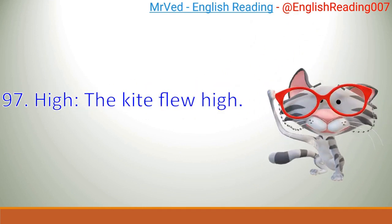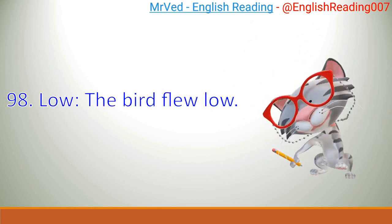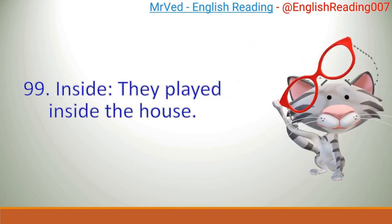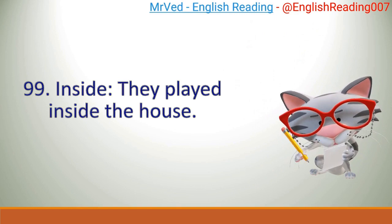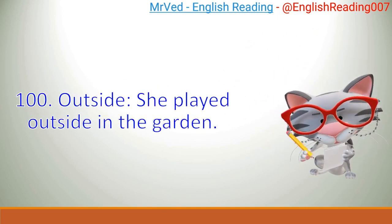97. High. The kite flew high. 98. Low. The bird flew low. 99. Inside. They played inside the house. 100. Outside. She played outside in the garden.